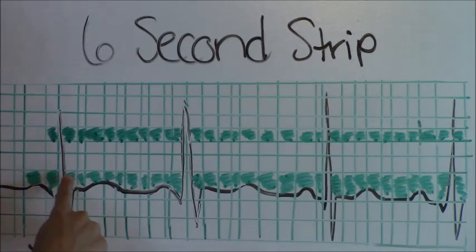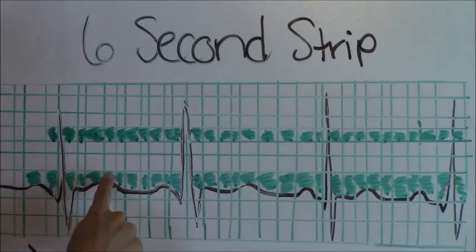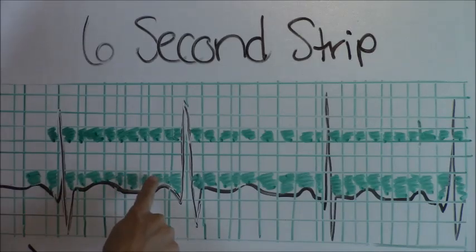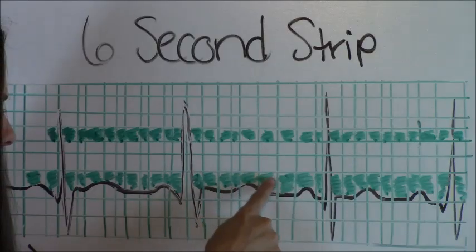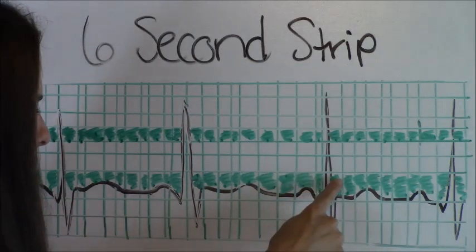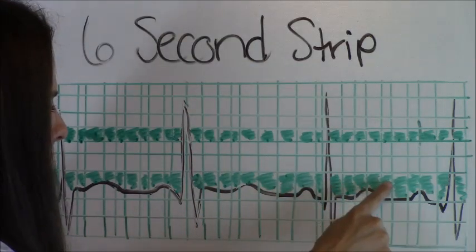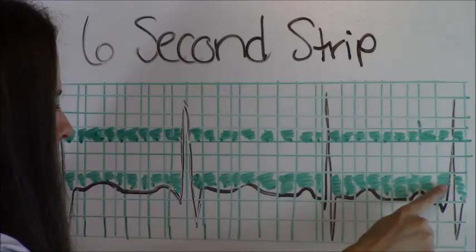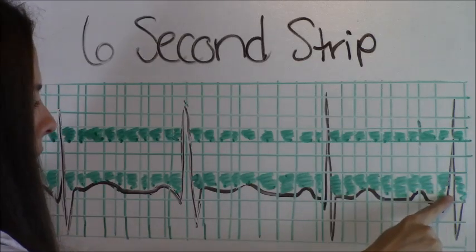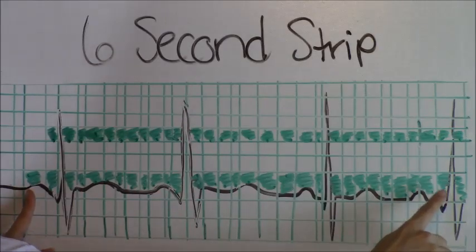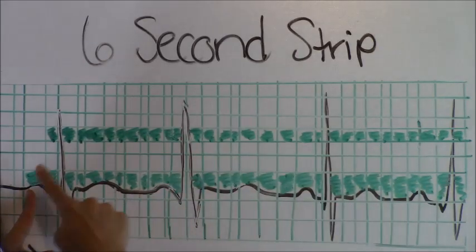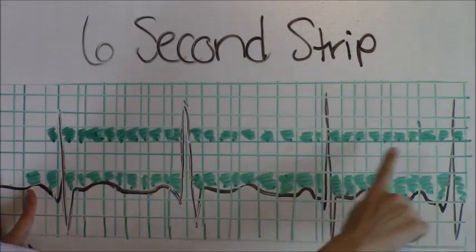We have 1, 2, 3, 4, 5, 6, 7, 8, 9, 10, 11, 12, 13, 14, 15, 16, 17, 18, 19, 20, 21, 22, 23, 24, 25, 26, 27, 28, 29, 30. So right here is where we'll stop. So we're going to measure from here to here. And how many P waves do we have in between that? We have one, two, three, four.